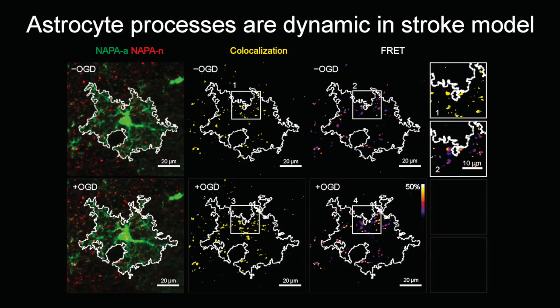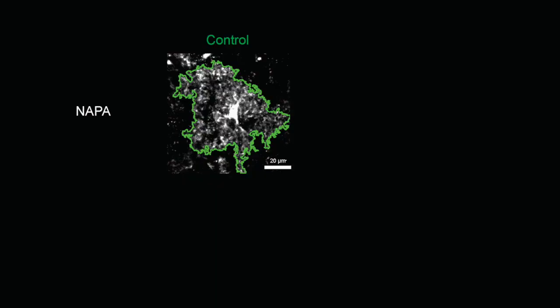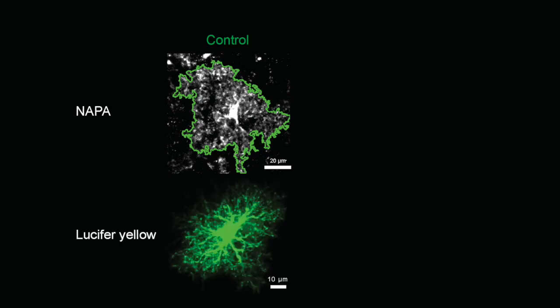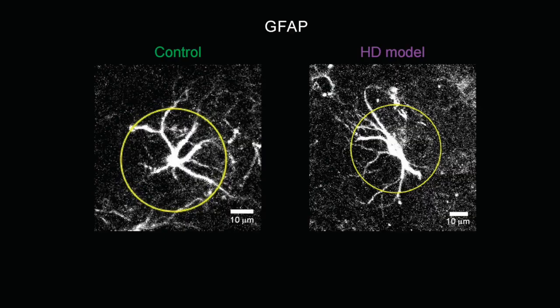In contrast to the relative stability of these interactions under electrical stimulation, when we examined astrocyte process contacts with synapses in disease conditions like stroke and Huntington's disease, we found good evidence for motility and dynamics. For example, in the OGD model of stroke, we observed a robust increase in the size of the astrocyte territory and a concordant change in the co-localized and FRET areas within the astrocyte territory. Furthermore, in an HD model, we found that astrocyte processes were markedly withdrawn, resulting in a loss of astrocyte synaptic interactions. The loss of these engagements occurred in the absence of overt astrogliosis as assessed by GFAP staining.